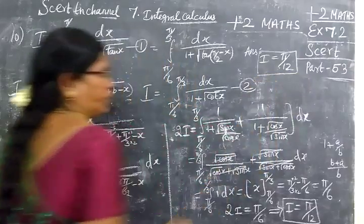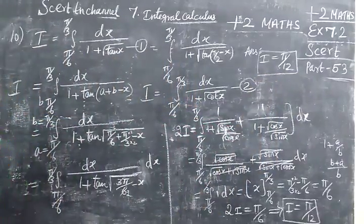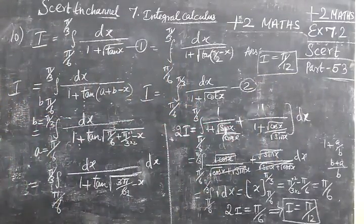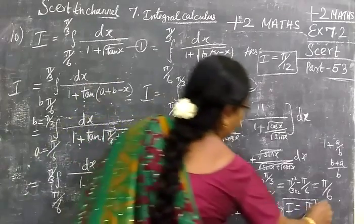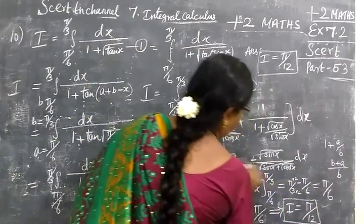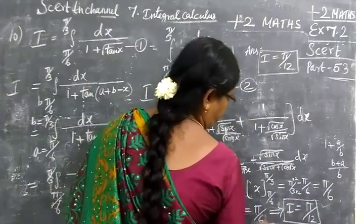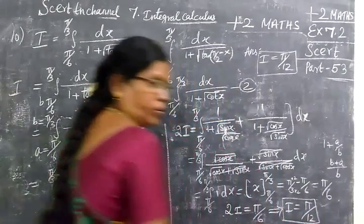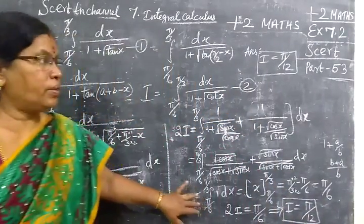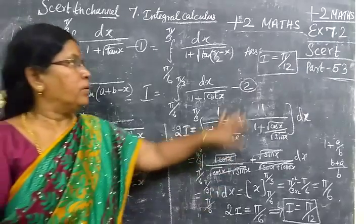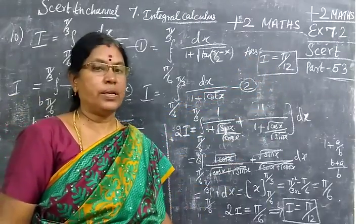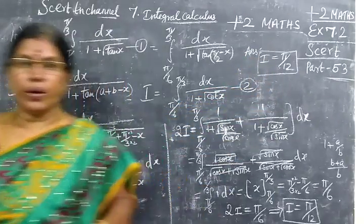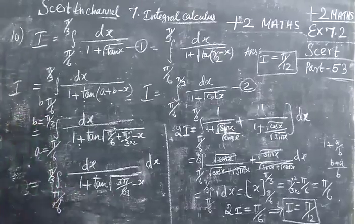So, the answer for this problem: I equals π/12. This is correct. This exercise, 7.2, is over. In the next class, we see 7.3. Thank you.